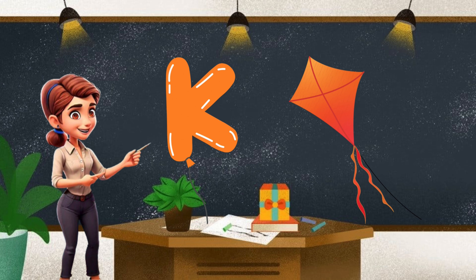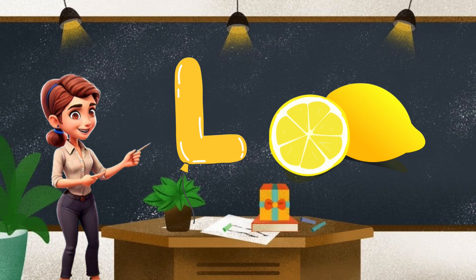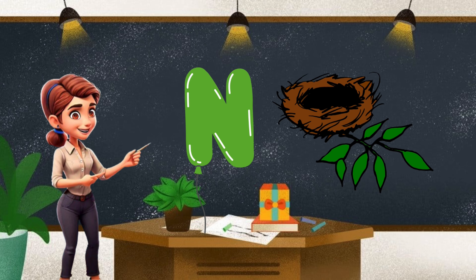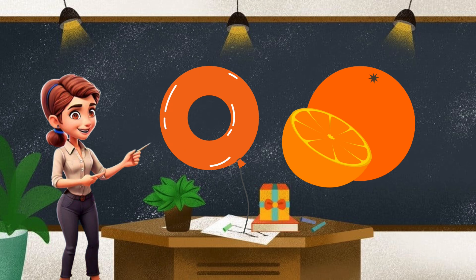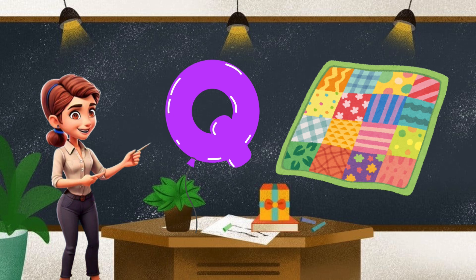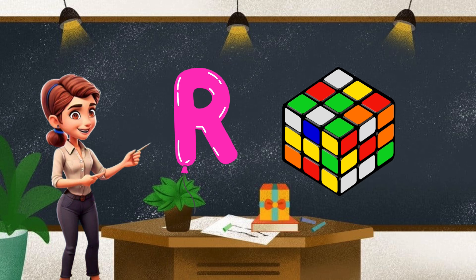J for jug. K for kite. L for lemon. M for monkey. N for nest. O for orange. P for pomegranate. Q for quilt.